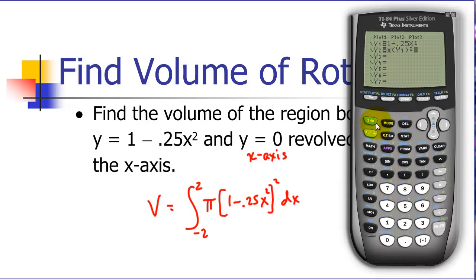We use the vars key, go over to yvars, pick a function number 1, then we want to square that function. That's going to be our volume formula here. We can now integrate second calc 7. Since I'm using y2 to be my volume here, I've got to make sure when I integrate that I've selected y2 here. I want to integrate from negative 2 to positive 2. We get a volume of 6.7 approximately cubic units.